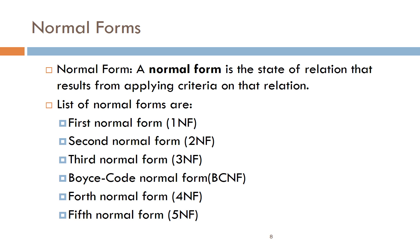A normal form is the state of a relation that results from applying criteria on that relation. When you apply the rules or criteria of normal forms, the state of the relation at that point is known as its normal form. The list of normal forms is: First Normal Form (1NF), Second Normal Form (2NF), Third Normal Form (3NF), Boyce-Codd Normal Form (BCNF) — a variation of 3NF — Fourth Normal Form (4NF), and Fifth Normal Form (5NF).